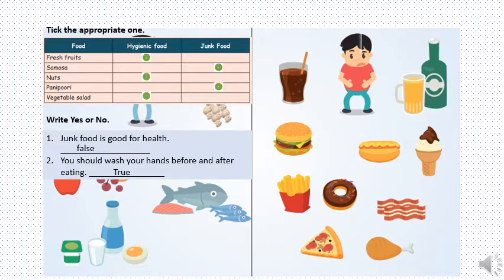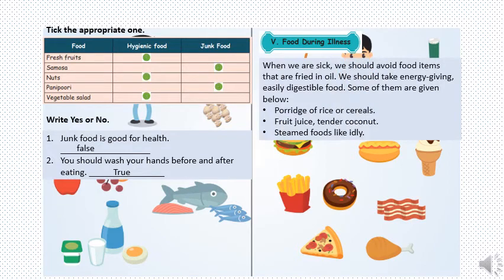Now, food during illness. When we are sick, what should we eat and what should we avoid? We should avoid food items which are fried in oil when we are sick. We should take energy-giving, easily digestible food. Examples: porridge of rice or cereals, fruit juice, tender coconut, steamed food like idli.